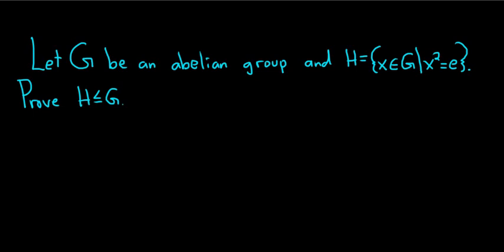Let G be an abelian group and H be equal to the set of all x in G such that x squared is equal to e, where e is the identity element. We're going to prove that H is a subgroup of G. This symbol you see here, this inequality symbol, is shorthand for subgroup. So, proof.